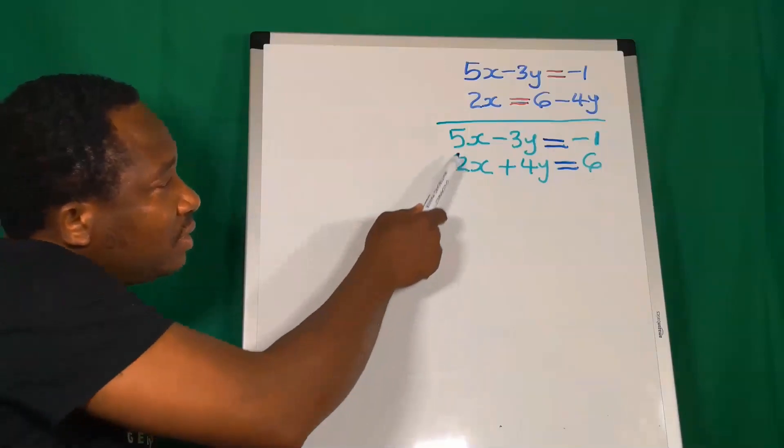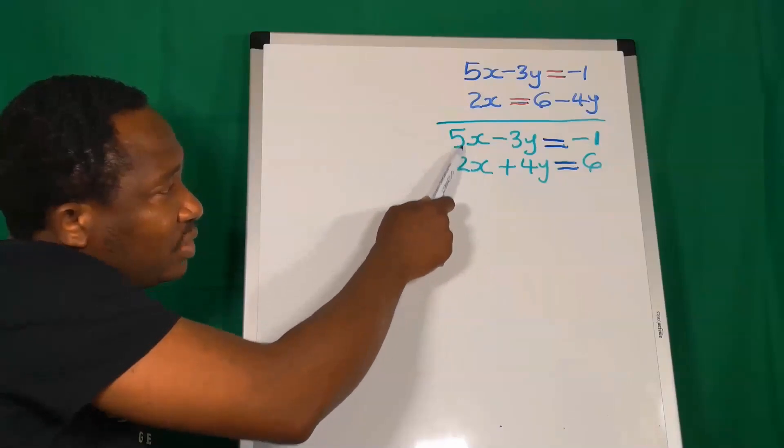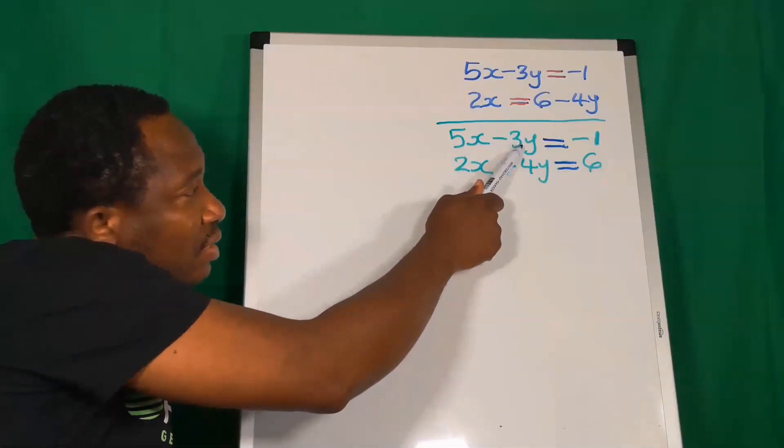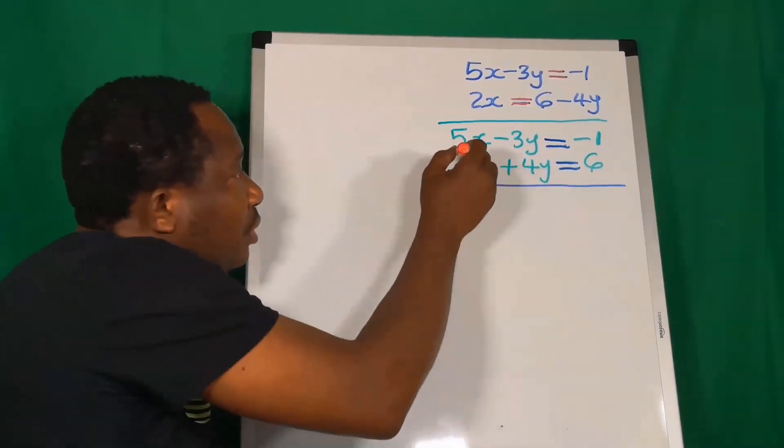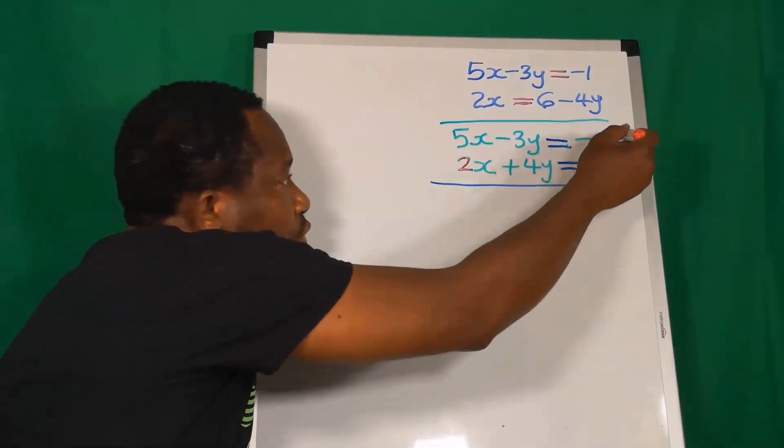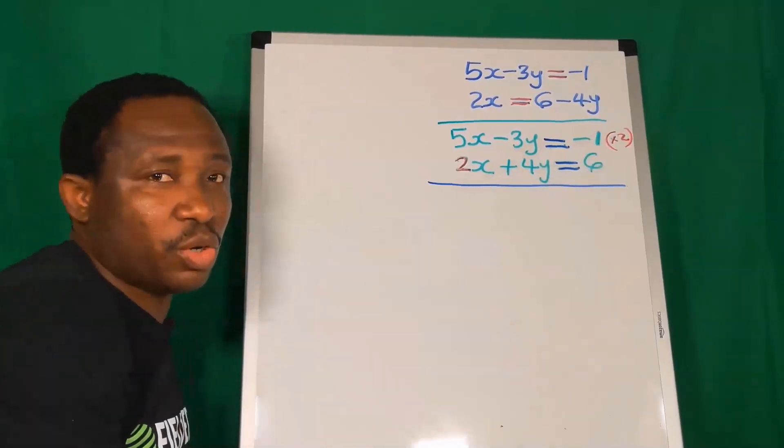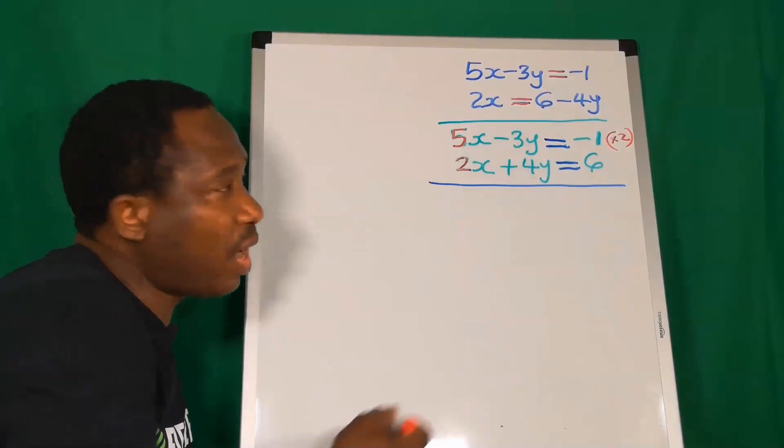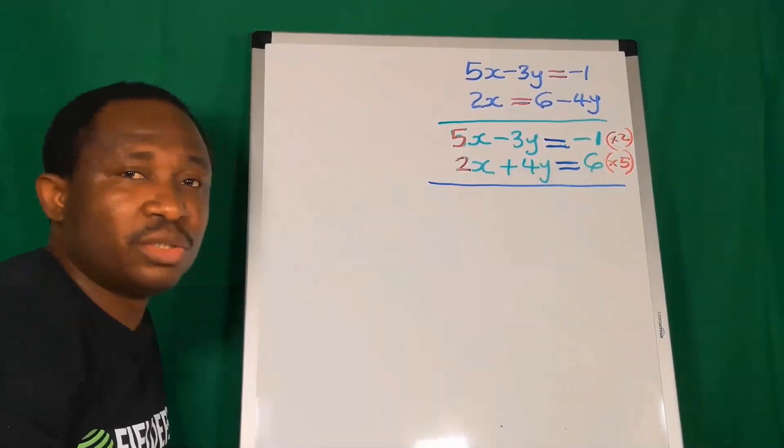We're going to consider that the coefficients of x in equation 1 and 2 are not the same. Likewise, the coefficients of y in equation 1 and 2 are not the same. Hence, I will use this 2, which is the coefficient of x in equation 2, to multiply everything in equation 1. I will use this 5 in equation 1 to multiply everything in equation 2.